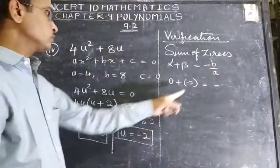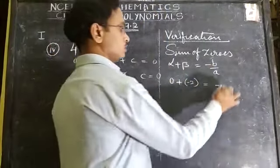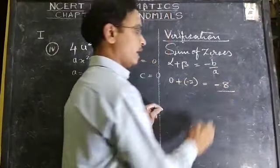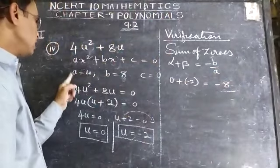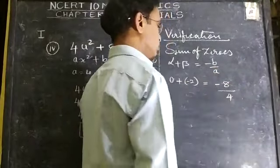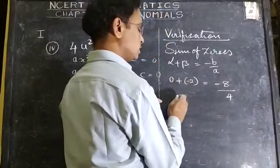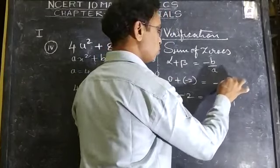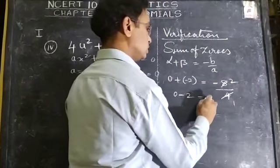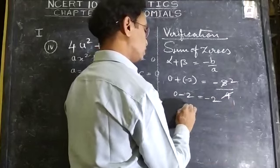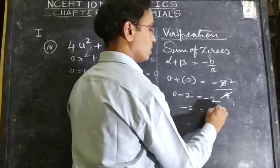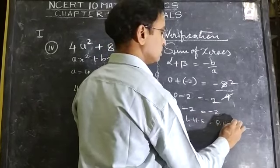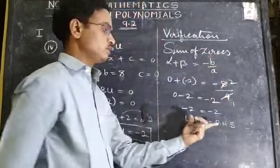B value is 8. Minus, as it is. B value 8 divided by A value. What is the A value? 4. So -2 = -8/4. 0 + (-2) = -2, and -8/4 = -2. Verified.